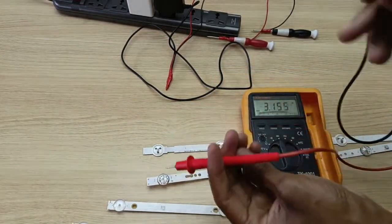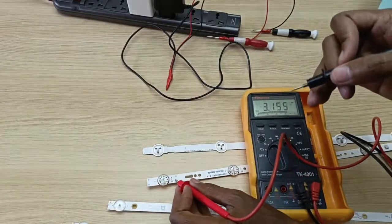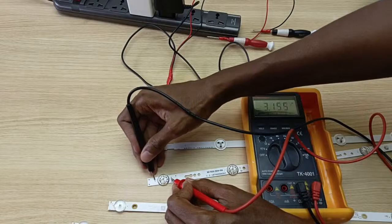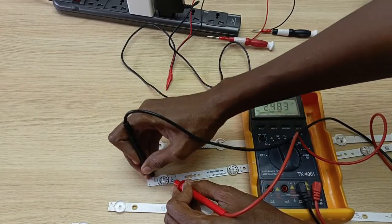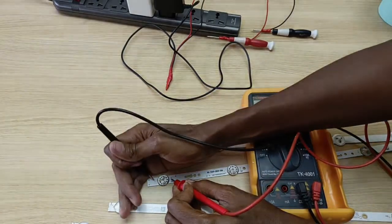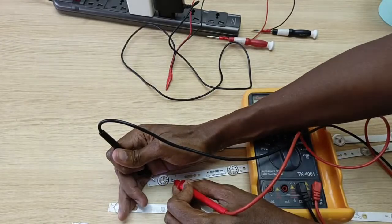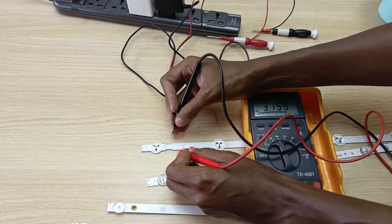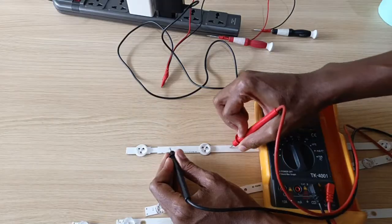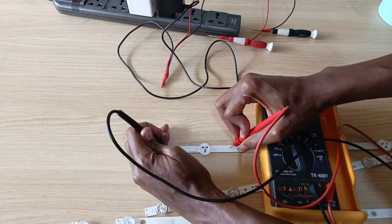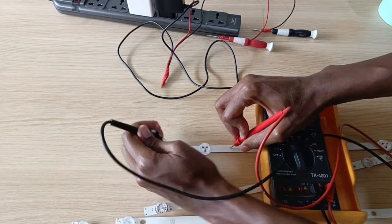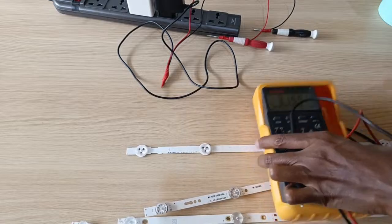You just place the red positive lead on the positive and the black one on the negative. I hope you can see it lights up very dimly. This is how you can test these lights. So it's very easy to use a multimeter when you are at a customer's place.